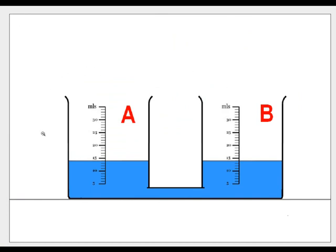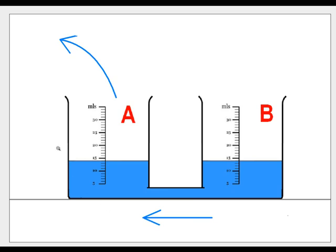To explain equilibrium: imagine two beakers full of water joined together with a pipe at the bottom. If we were to put water into beaker A, the water would naturally flow towards the right until the water levels became the same again — that's what we mean by an equilibrium reaction. Likewise, if we took water out from beaker A, the water would naturally flow from B to A, and a new level of water would be found.